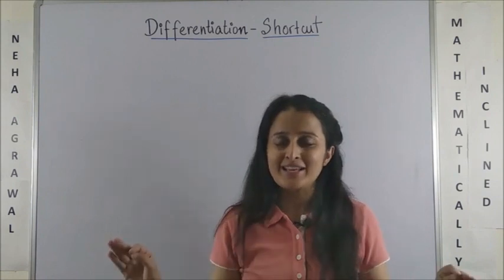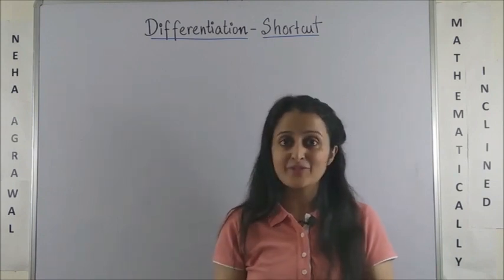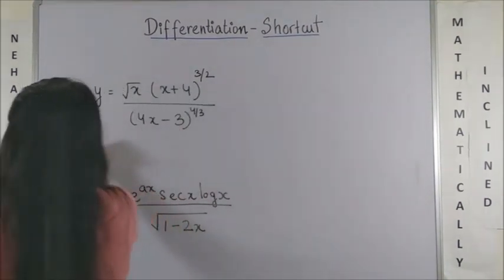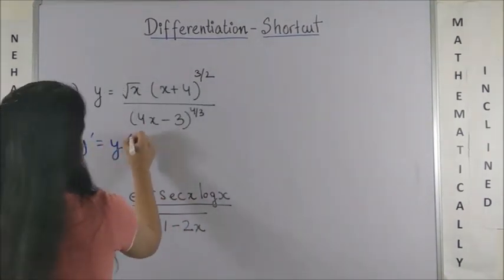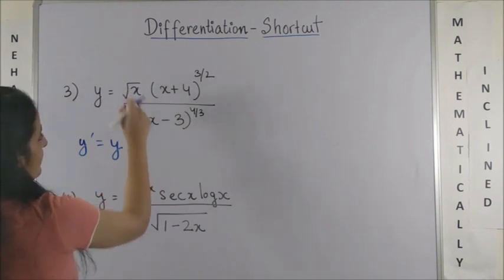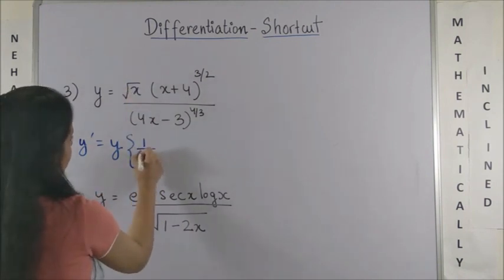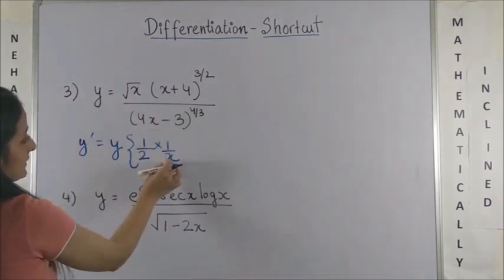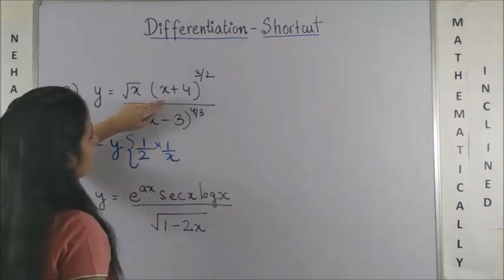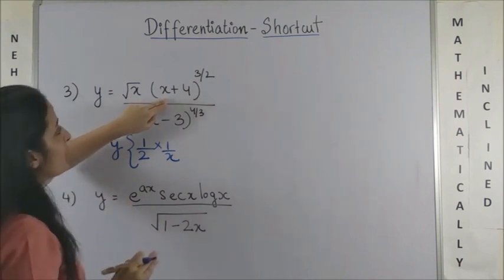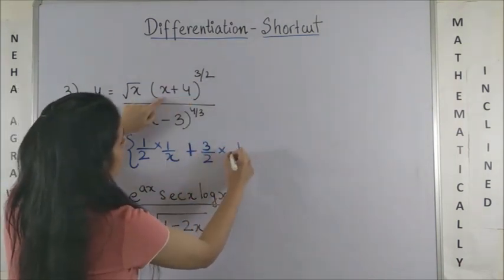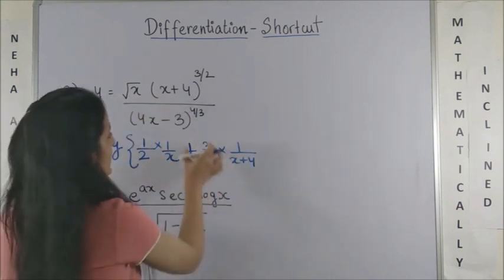And for now, keep watching. Now going with the same logic again, when I differentiate this, I get y as it is. Since you see the power is 1/2, so I write it upon 1/x. If you realize, the derivative of x is simply 1 on the top. I also have x + 4, so plus 3/2 into 1/(x+4), again the derivative is 1.